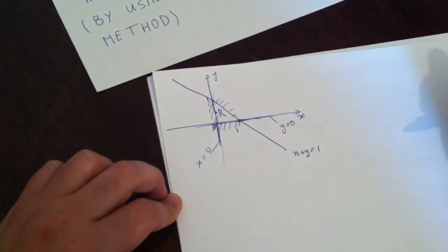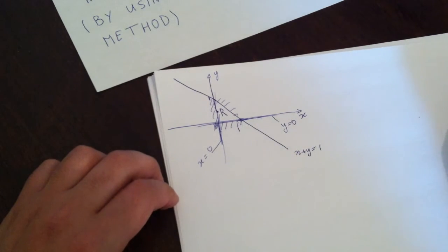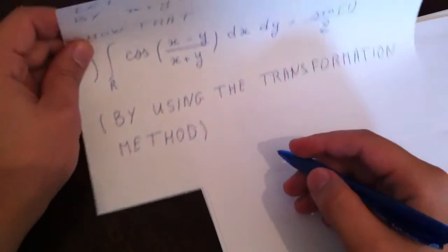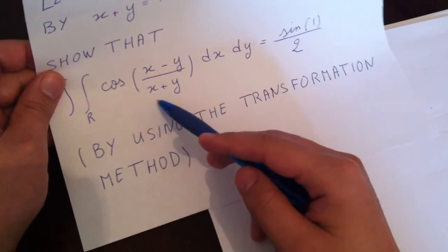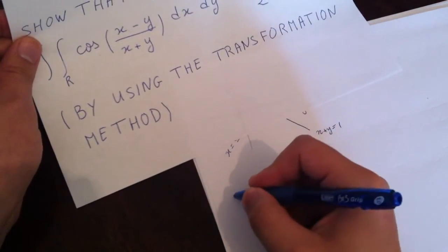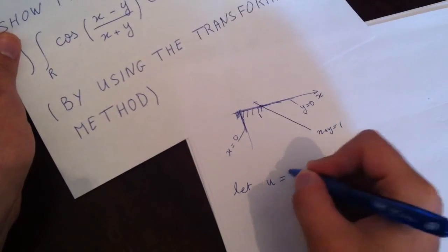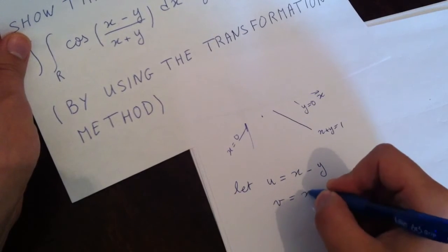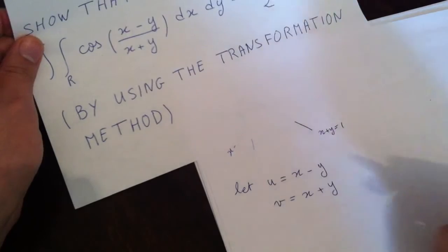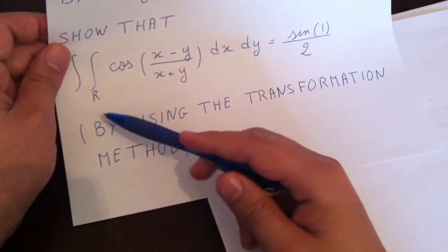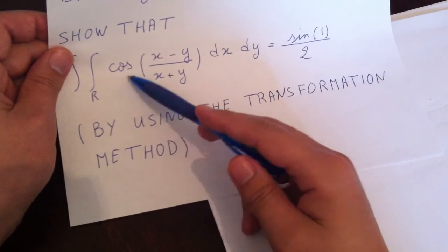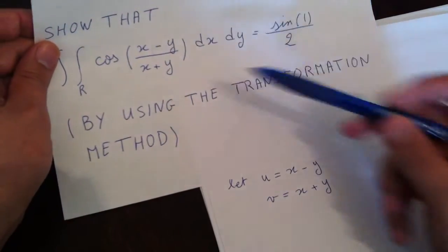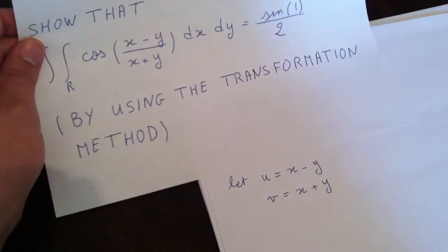Now we have to find a good transformation. In our example, it's not hard to find one. So we have cos((x minus y) divided by (x plus y)), so let u equal x minus y and let v equal x plus y. That gives us the integral over the transformed region RT of cos(u/v), then the Jacobian, then du dv.